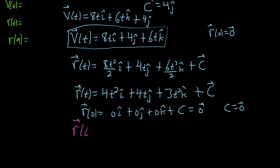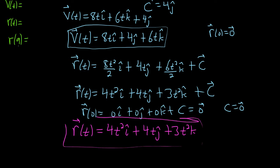So it'll be r of t equals 4t squared i hat plus 4t j hat plus 3t squared k hat plus 0. So you don't bother to write it. So that would be r of t.